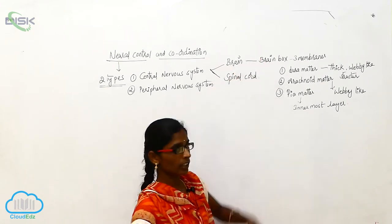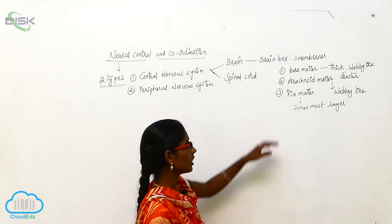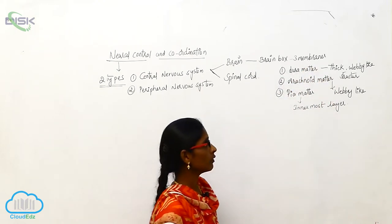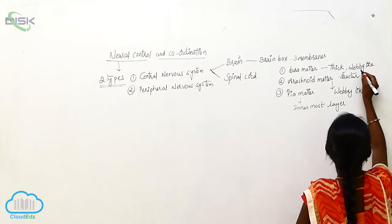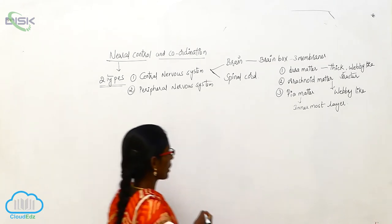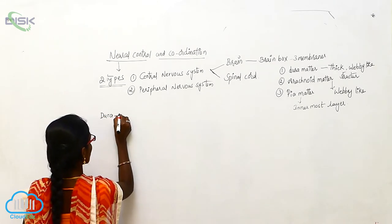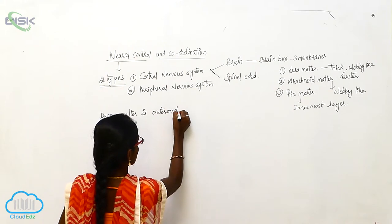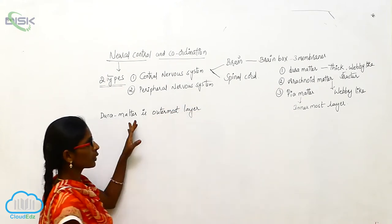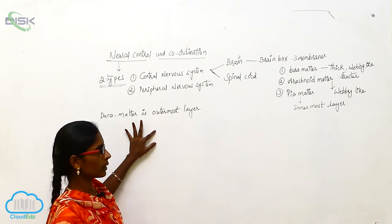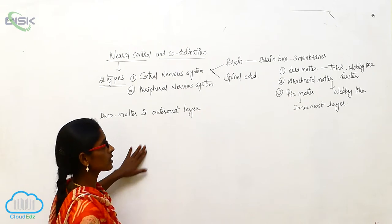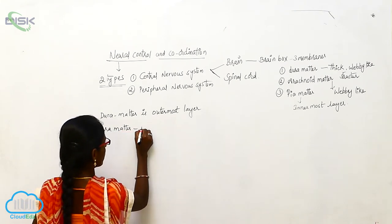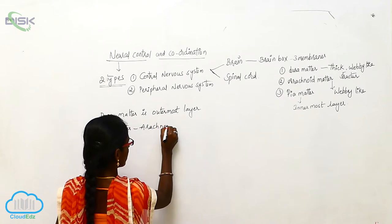The Brain has three membranes: Dura Mater, Arachnoid Mater, and Pia Mater. Dura Mater is a thick and webby-like structure, and it is the outermost layer.